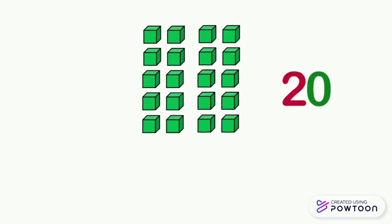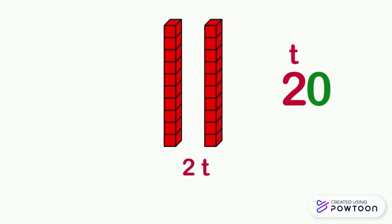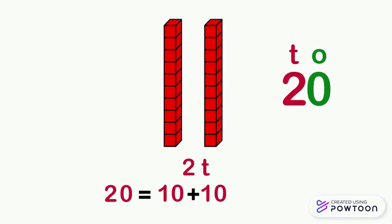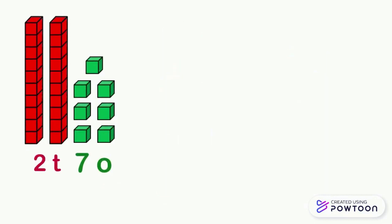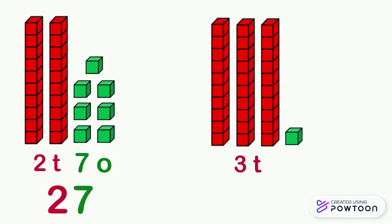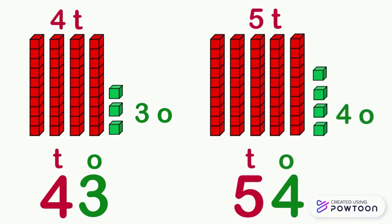In the number twenty there are two groups of ten, which means two tens and zero ones — twenty equals ten plus ten. Here we have two tens and seven ones; these digits represent the number 27. Here there are three tens and one one; these digits represent the number 31. In the number 43 there are four tens and three ones, and in the number 54 there are five tens and four ones.